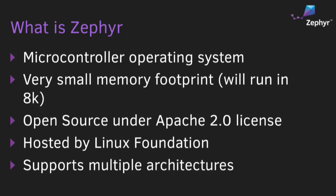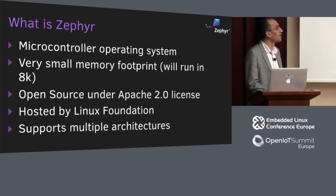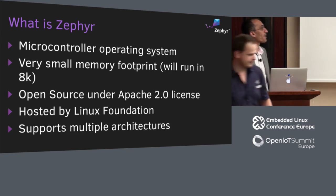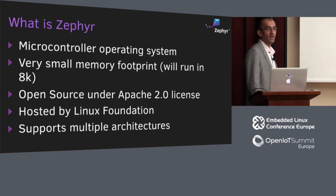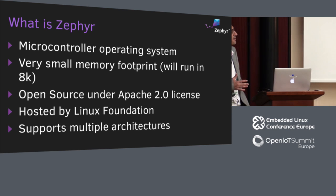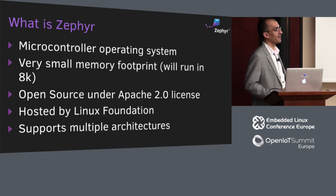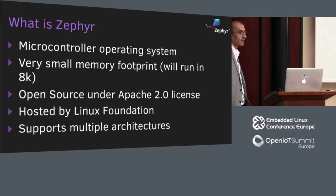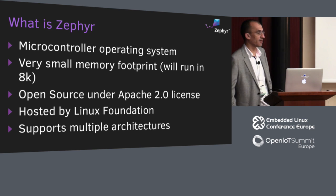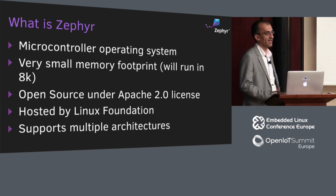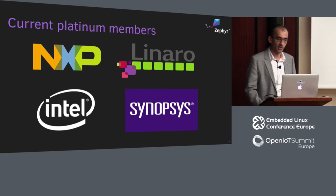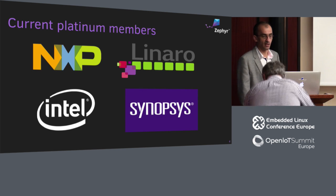For some of you who are hearing about Zephyr for the first time, it's a microcontroller operating system with a very small memory footprint. We can run on systems with 8K of RAM. It's open source under the Apache 2.0 license, hosted by the Linux Foundation, and supports multiple architectures. We have four platinum members in the project: NXP, Linaro, Intel, and Synopsys.